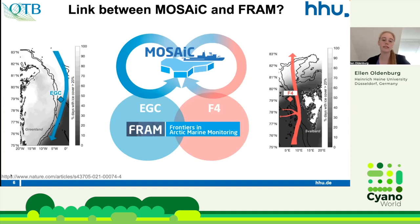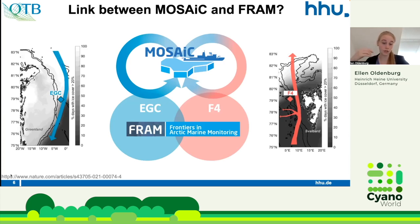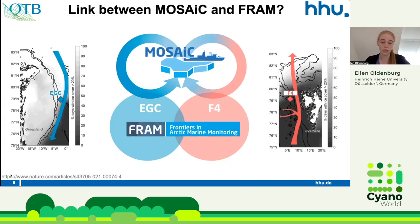The reason these currents are so important is that we can now see whether the data measured at these sites will differ from that of the Polarstern, and if so, in what aspects. If not, we can use them as a reference point for how measured parameters behave or change in the Arctic. We can also see whether the values from the Polarstern and the FRAM sites become more similar over time, as global warming means less and less Arctic ice remains.